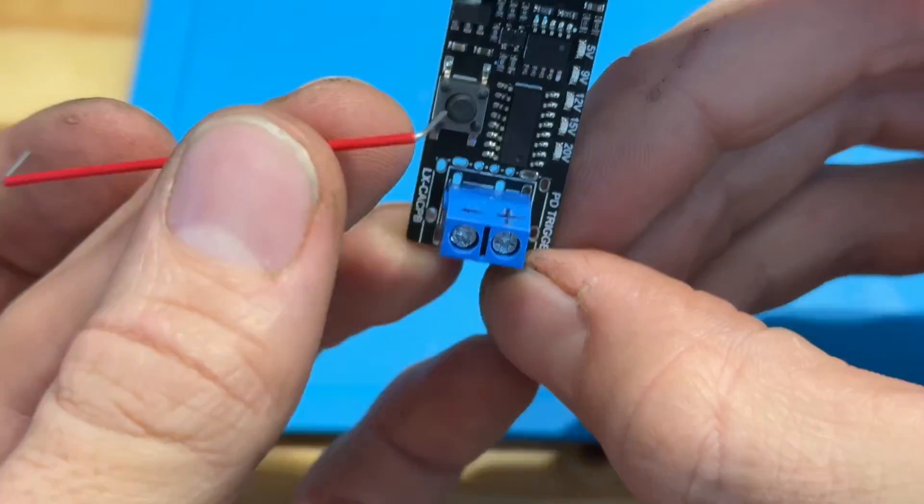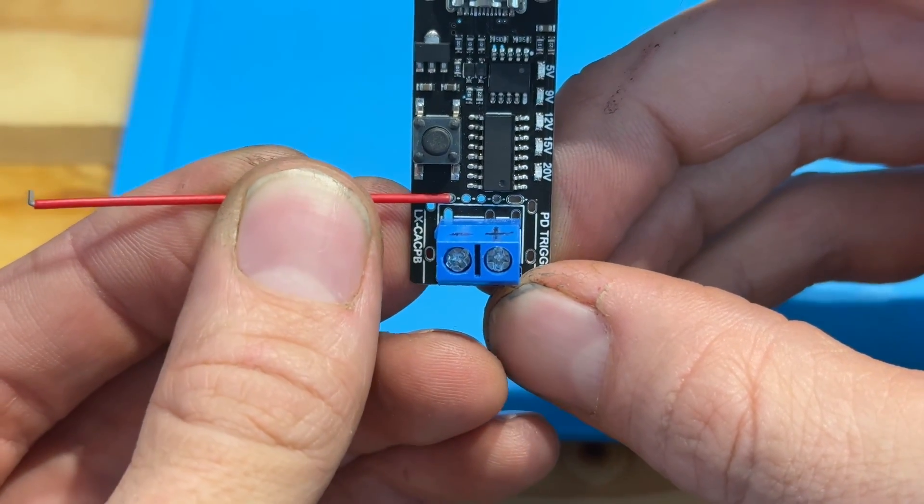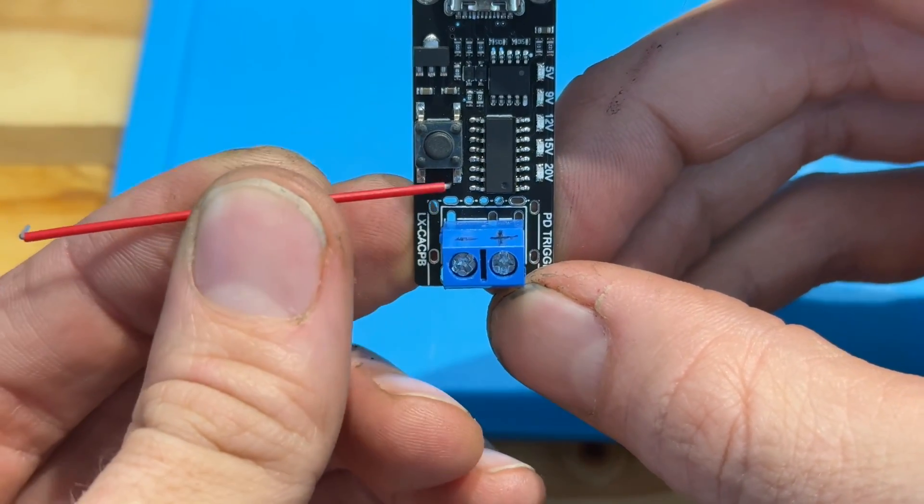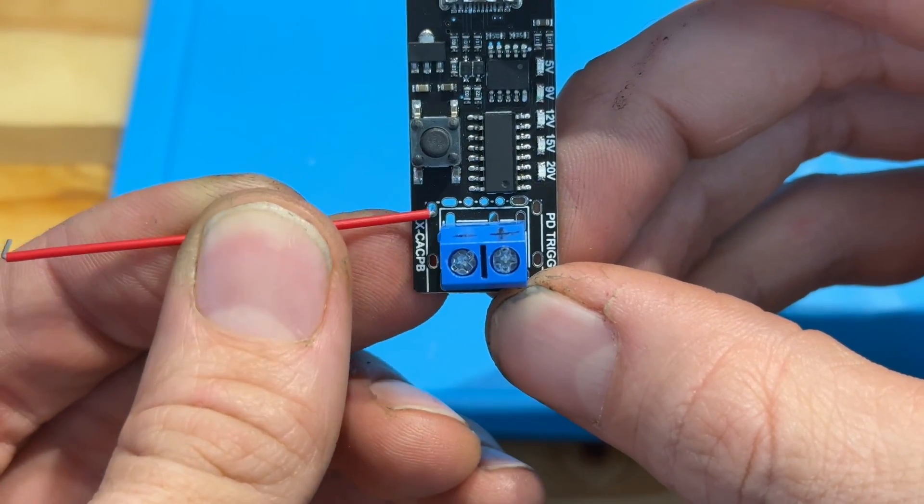So my solid core wire, I'm using solid core so I get the rigidity, and I'm going to solder it in to that via, and then we're going to come down here and do the ground.